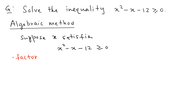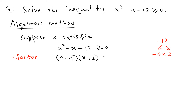To factor, we have negative 12, and we need two numbers that multiply to negative 12 and add to negative 1. Those two numbers are negative 4 and 3. So we can write the factorization directly as (x minus 4)(x plus 3). Those are the factors and we're done with the factoring.